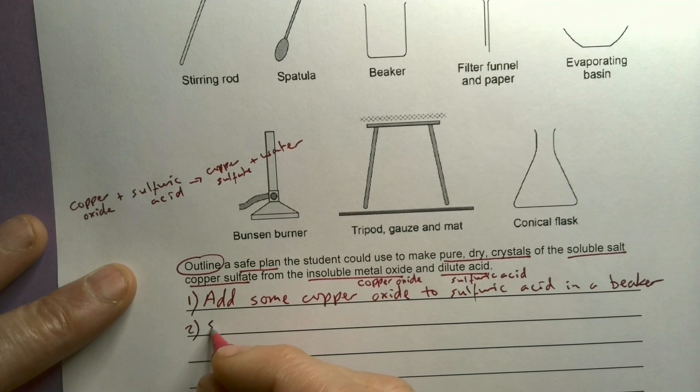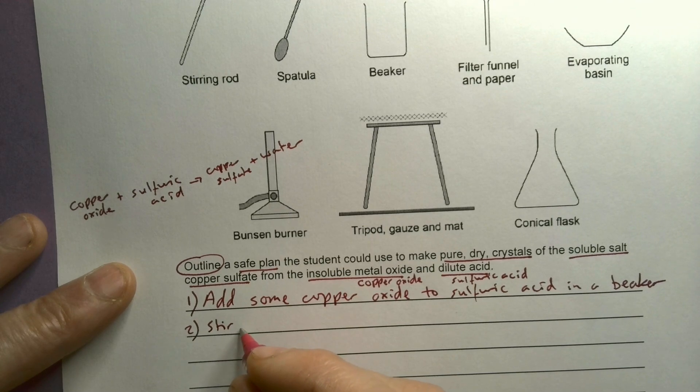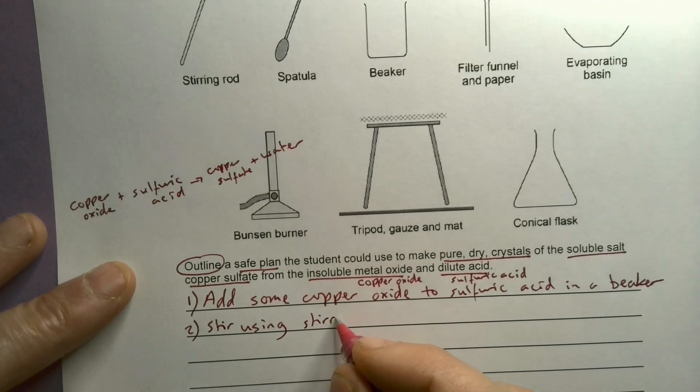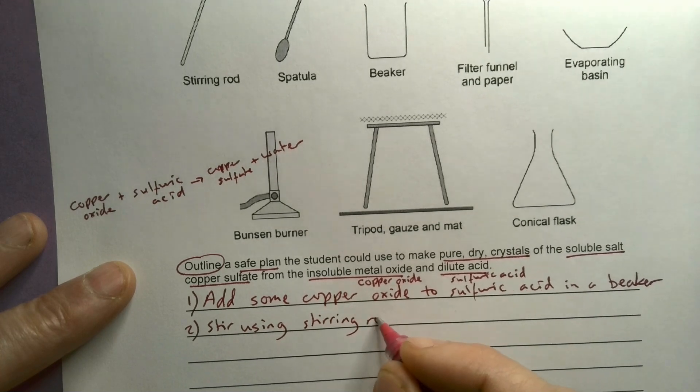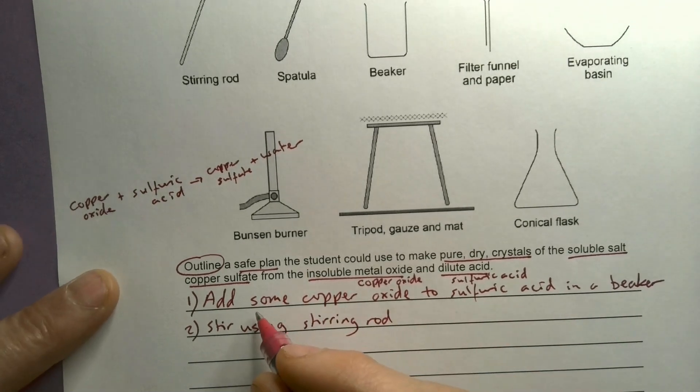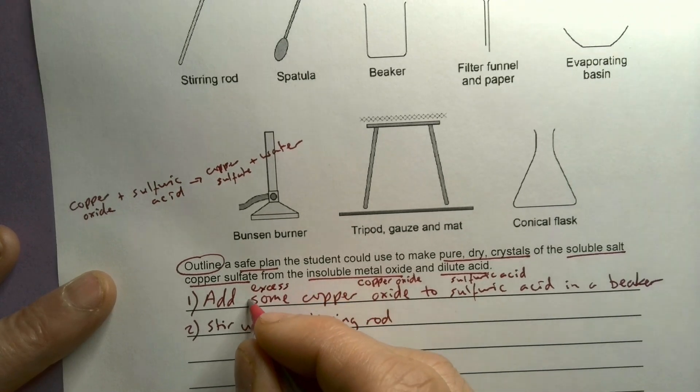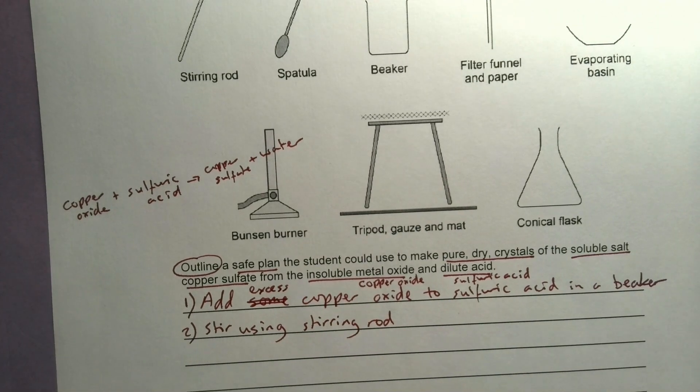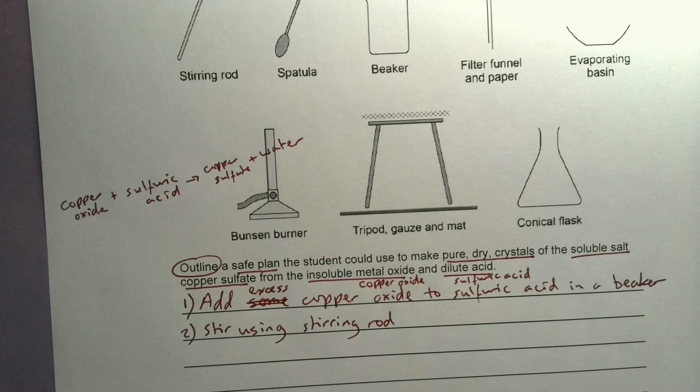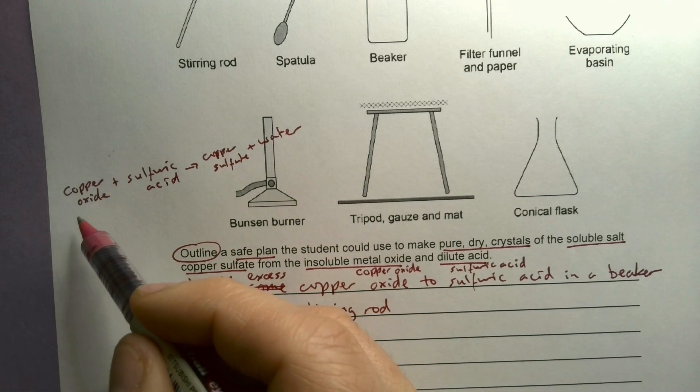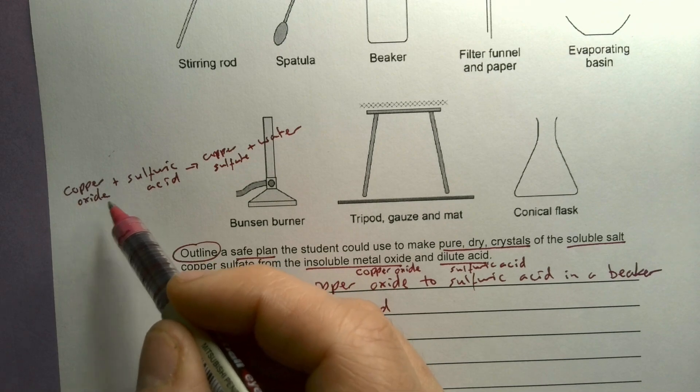Okay, the second thing, I'm going to stir using a stirring rod. Now I've said some, what I might actually use is excess instead of some, because excess means I've added more than I'd need to do that reaction. So I'm going to end up with, because I've got more copper oxide than I need, excess, I'm going to end up with some copper oxide just remaining.